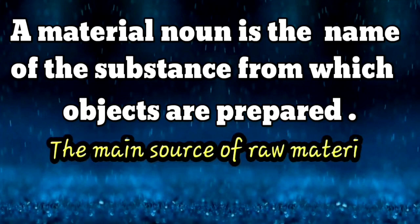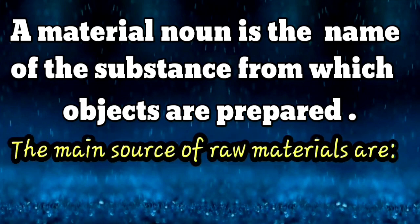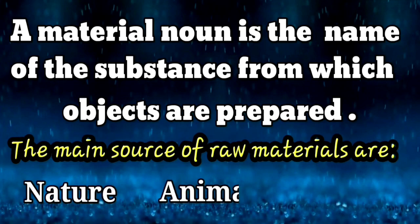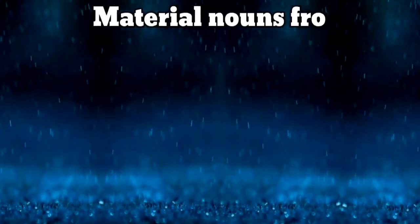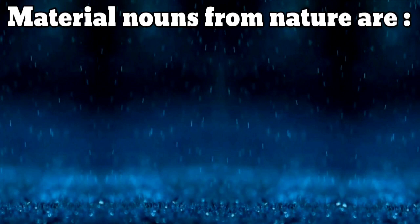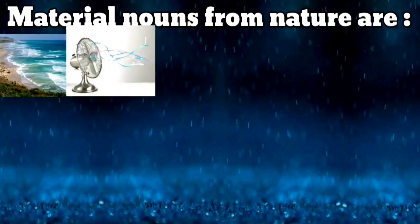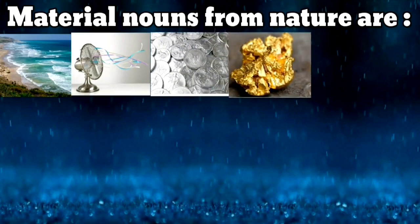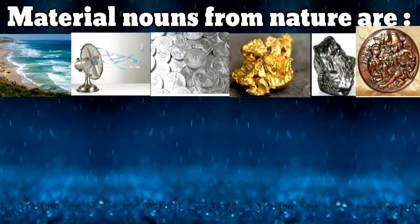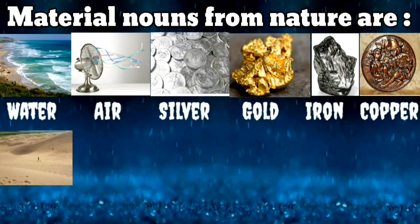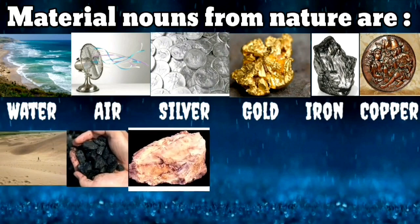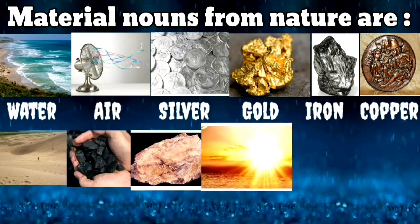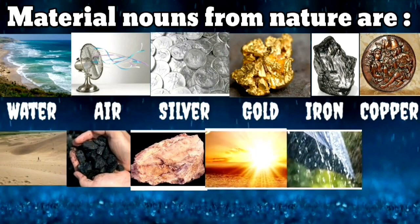The main sources of raw materials are nature, animals and plants. For example, material nouns from nature are water, air, silver, gold, iron, copper, sand, coal, rock, sunlight, rain, earth, etc.